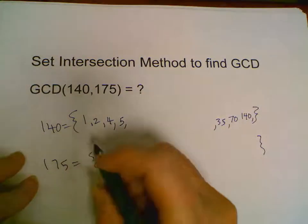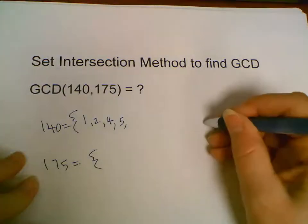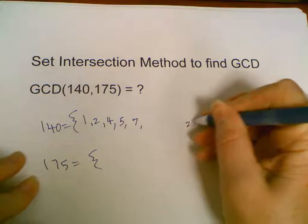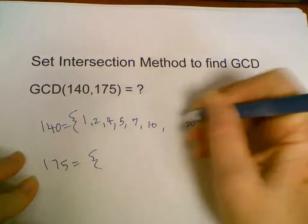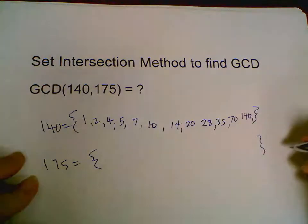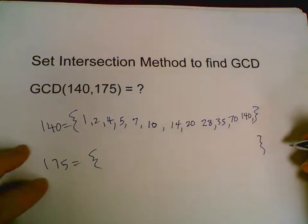4 is a divisor, it goes in 35 times. 5 is a divisor, we know that because it ends in a 0 or a 5, 5 times 28 equals 140. 7 times 20, 10 times 14. I'm speeding up a little. You can check the divisors on a calculator, but I would like you to know the test for divisibility.